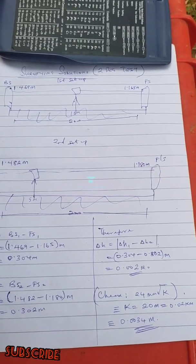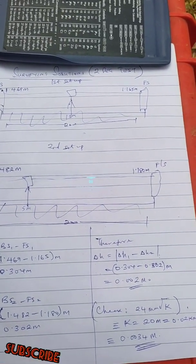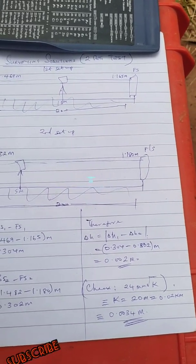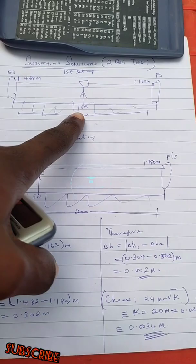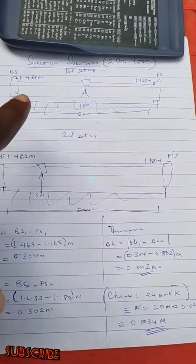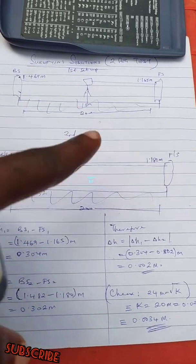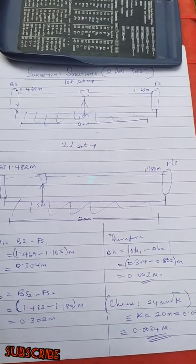For you to carry out the check for the third order, you use 24 millimeters times k, where your k is the distance covered in kilometers. So our k in this case is 20 meters. Remember that we are using the 20 meters, and then we set up on the 10 and the 5 meter mark. So our k is 20 meters, but in kilometers we are having 0.02 kilometers.